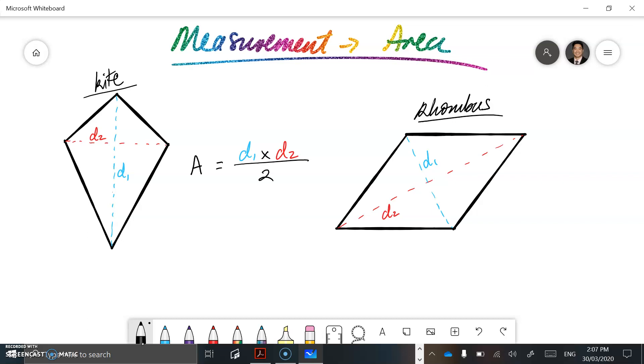So whatever these two lines are, if that is given to you in the context of the question, then you multiply those two numbers and you divide it by 2, and you're going to get the area for either your kite or your rhombus. Please add that to your notes.